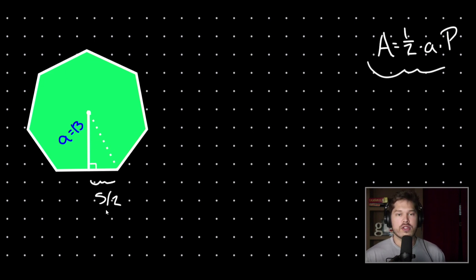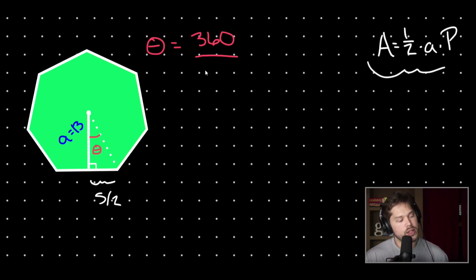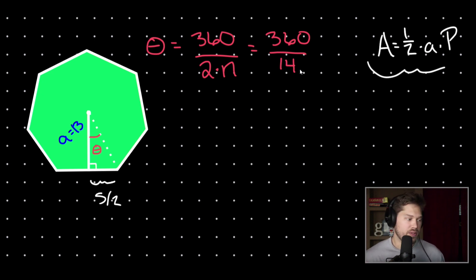In order to solve for s, we'll use trigonometry. But before we can do that, we need to know what the angle theta is. Theta is equal to 360 degrees divided by two times n, where n is the number of sides in your regular polygon. In this case, theta is equal to 360 degrees divided by 14, since two times seven is 14.